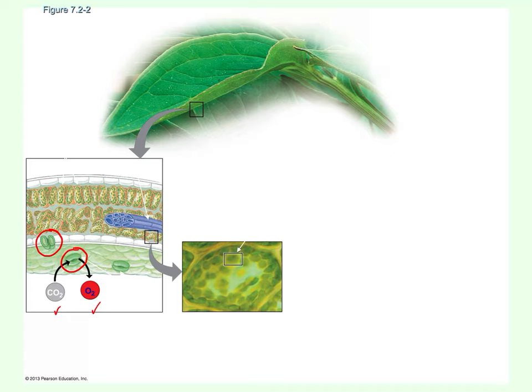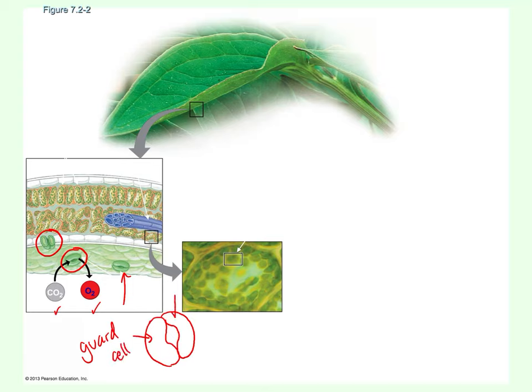Plants can actually control whether their pores are open or closed. On a really hot day, if a plant is in danger of losing too much water, it'll close the pores so water won't evaporate from the bottom of the leaf. If it's cooler, it will open the pores to exchange gases. The guard cells — letter B — are the cells that make up the pores. They look kind of like a fat letter C or a lima bean, and the open space in the middle is where CO2 and oxygen gas are exchanged.